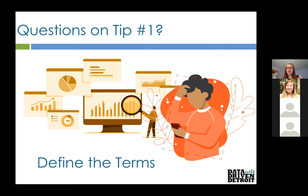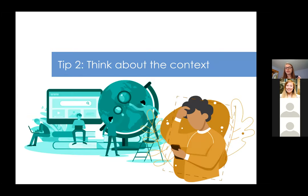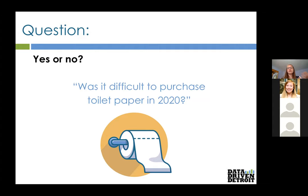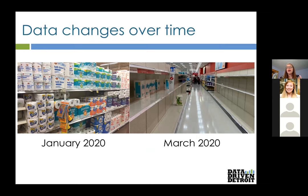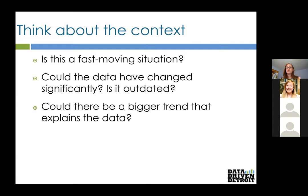Tip two is think about the context. Another question: was it difficult to purchase toilet paper in 2020? It depends — in January 2020 no, but in March 2020 yes. That's a simple example of how data changes over time. Think about whether it's a fast-moving situation — data collected a month ago might not represent what's happening right now. Could the data have changed significantly? Is it outdated? Could there be a bigger trend that explains the data?